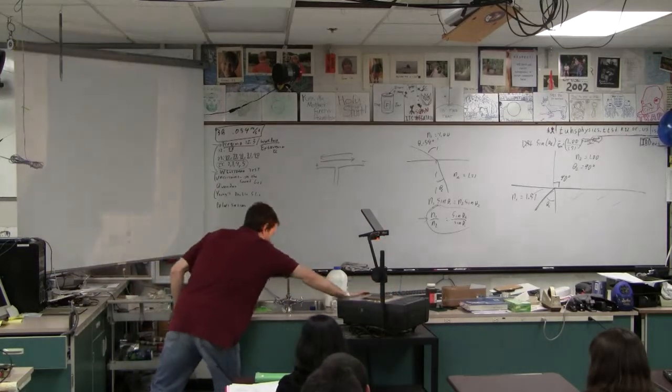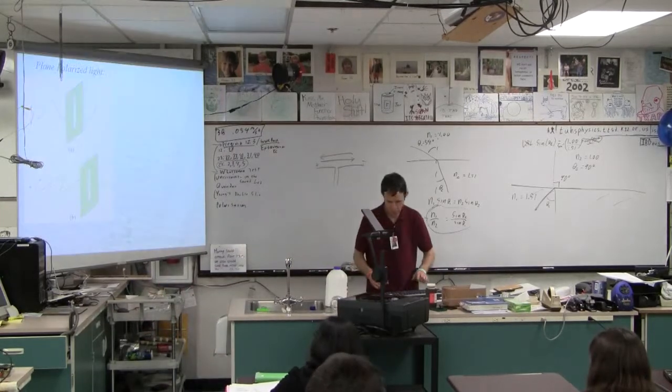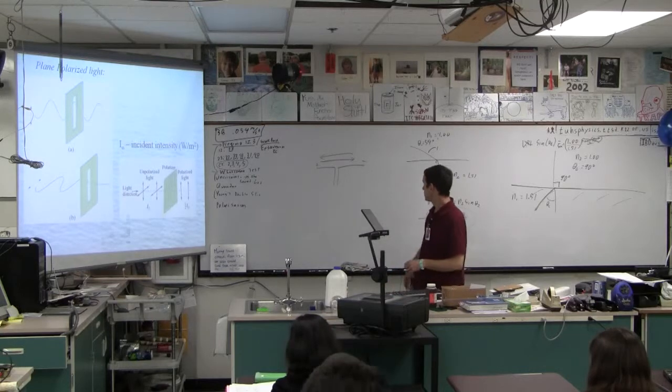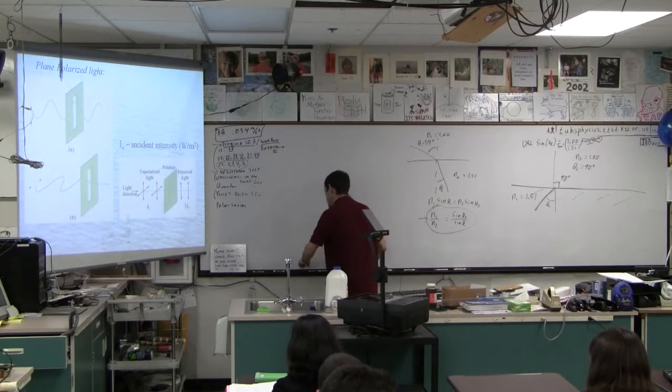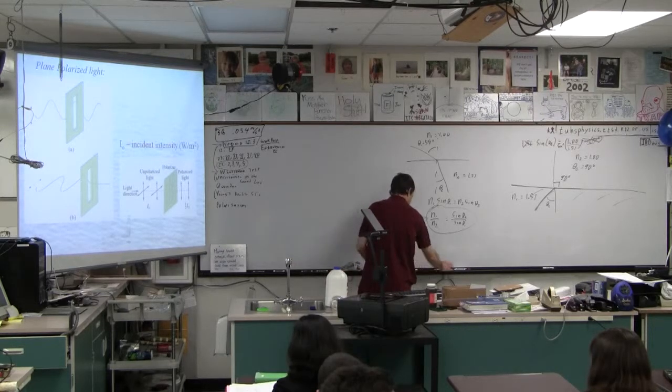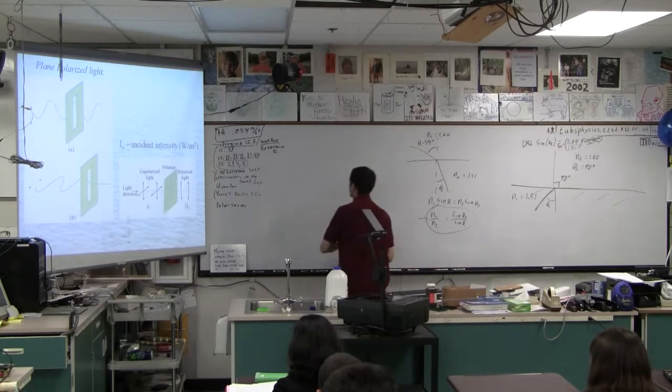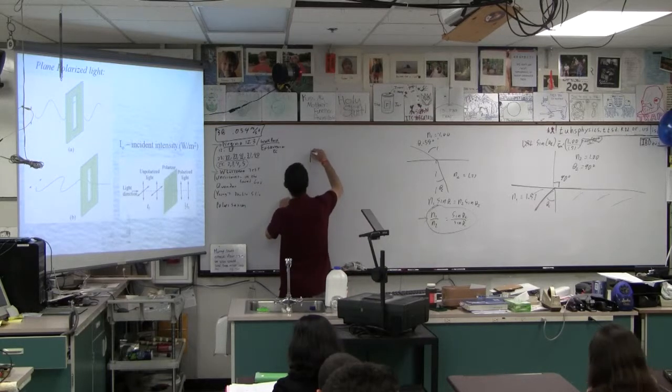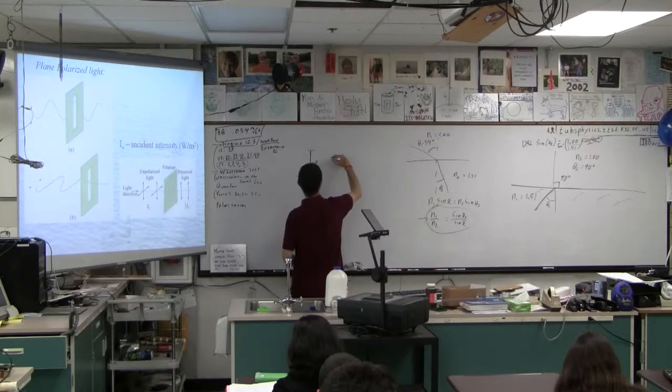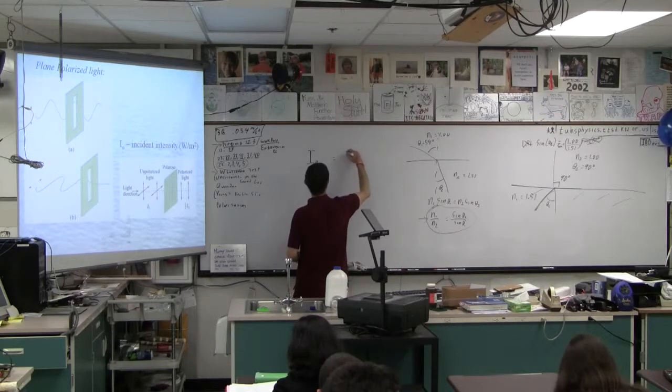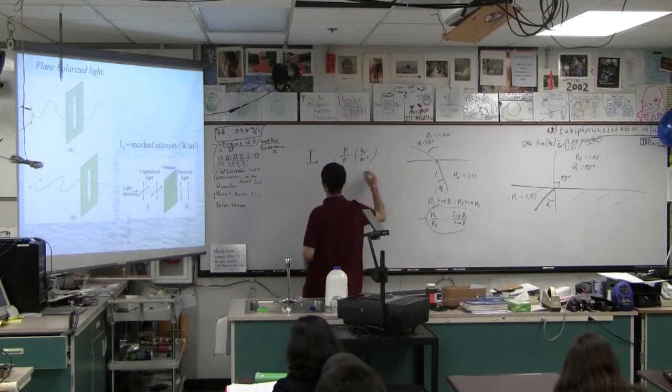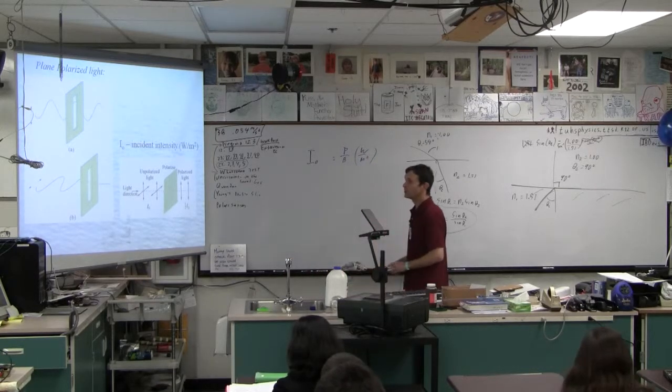So we talk about something called the intensity of the light. And the intensity of the light, we can talk about I₀, that just means it's the incident intensity. It is basically the power per area. It's the watts per square meter of light that's coming in. The solar constant is like about a thousand watts. Bright sunlight is about a thousand watts per square meter.